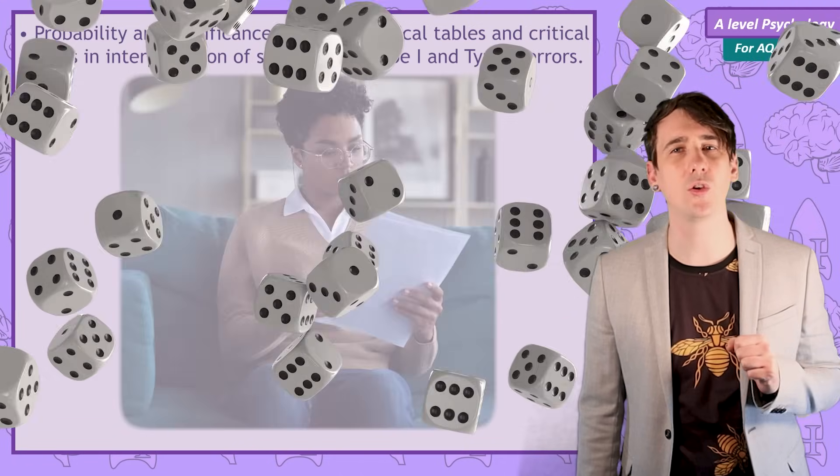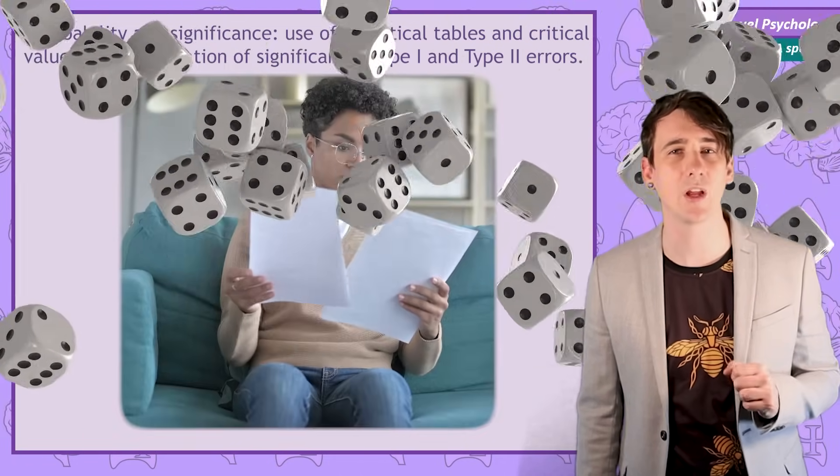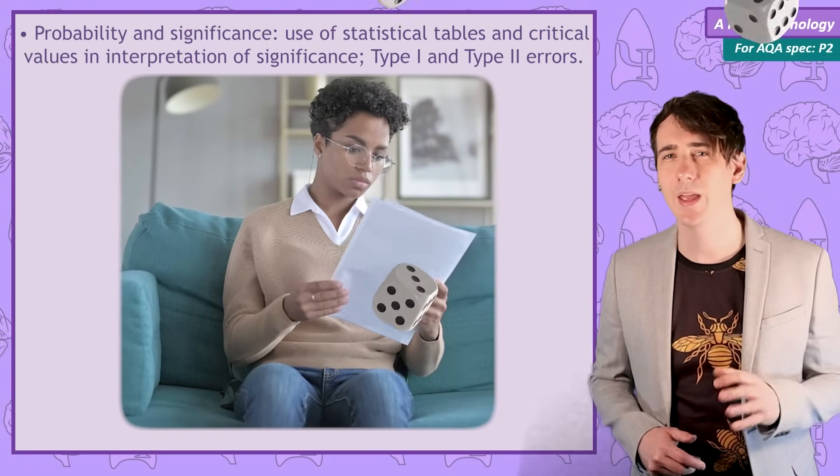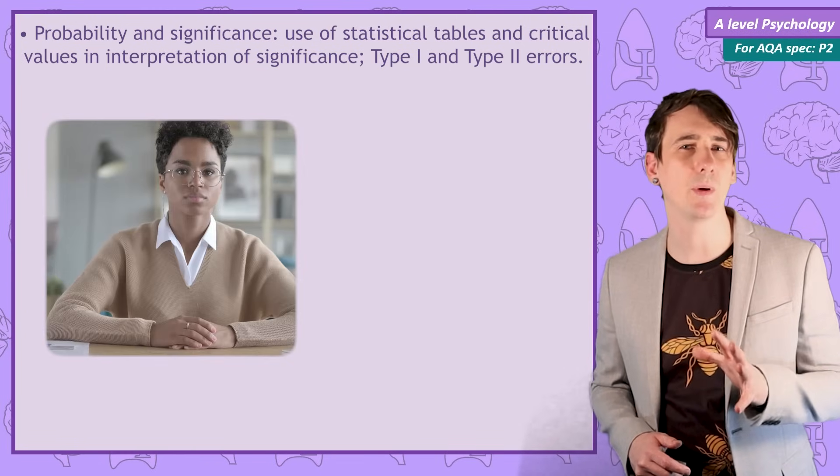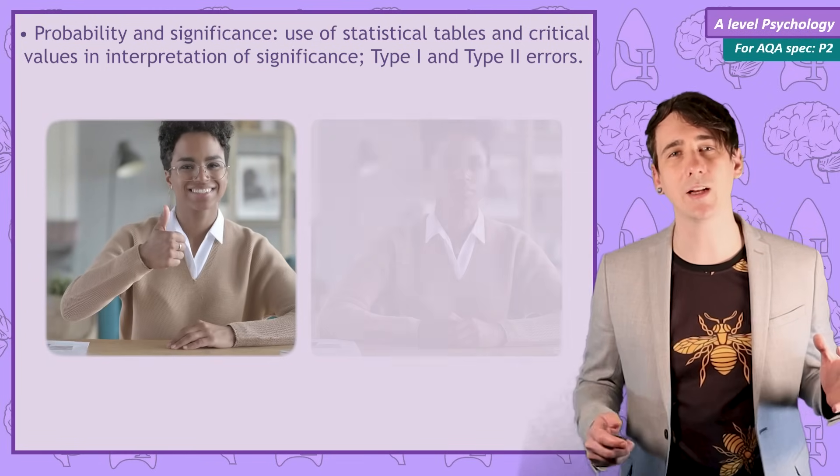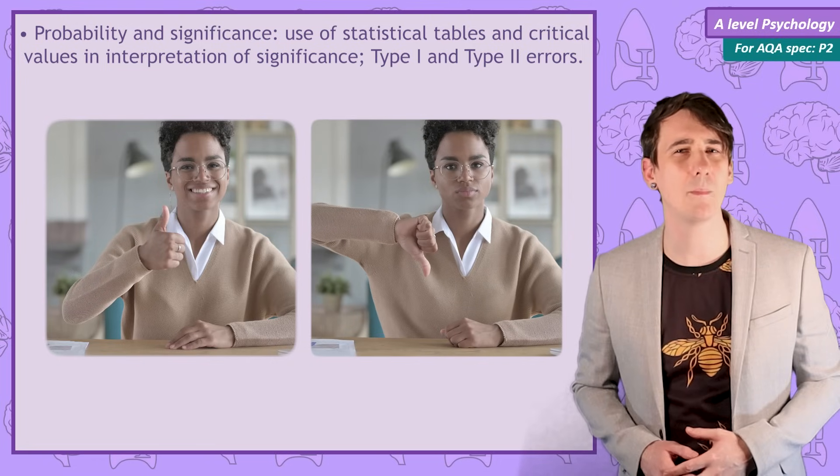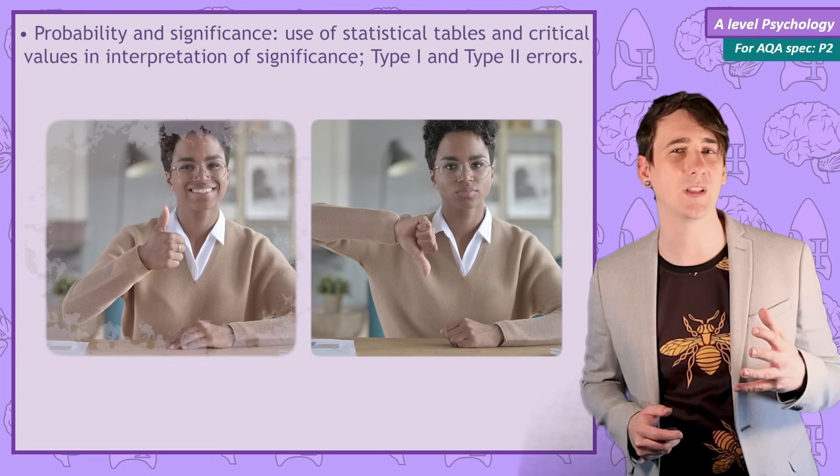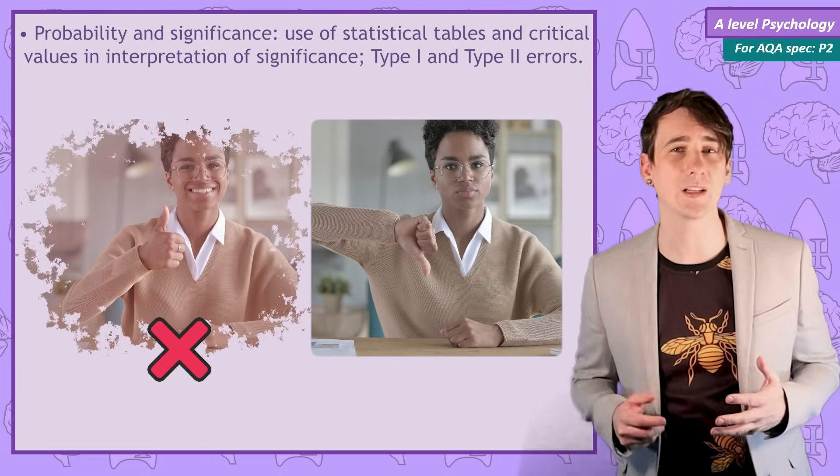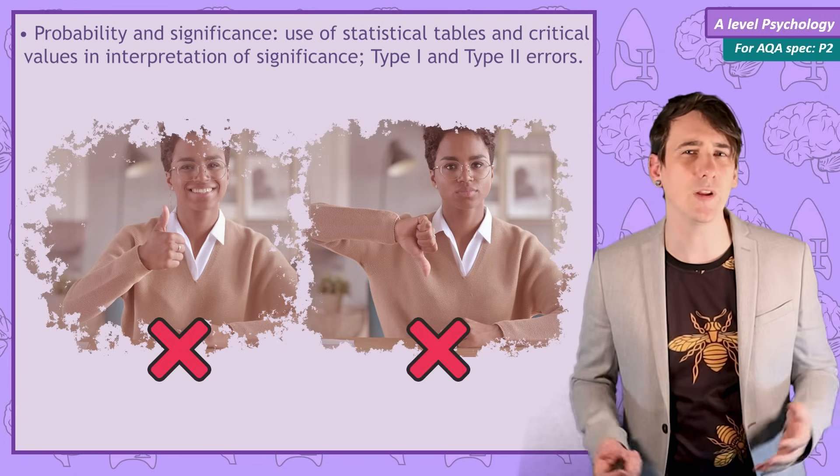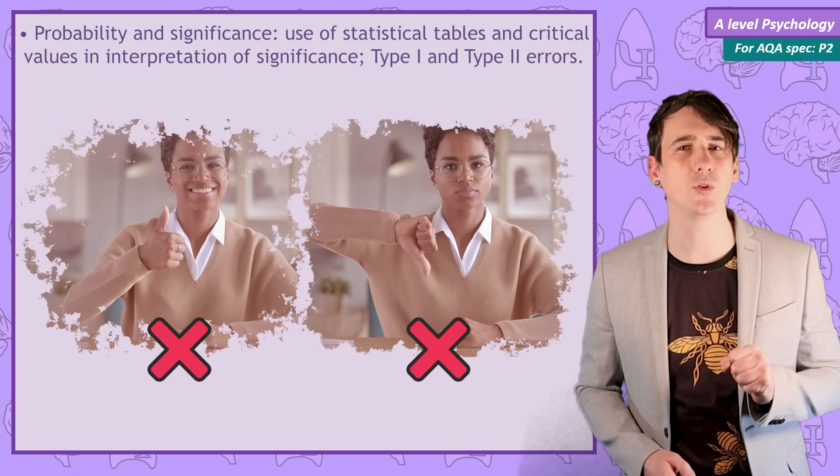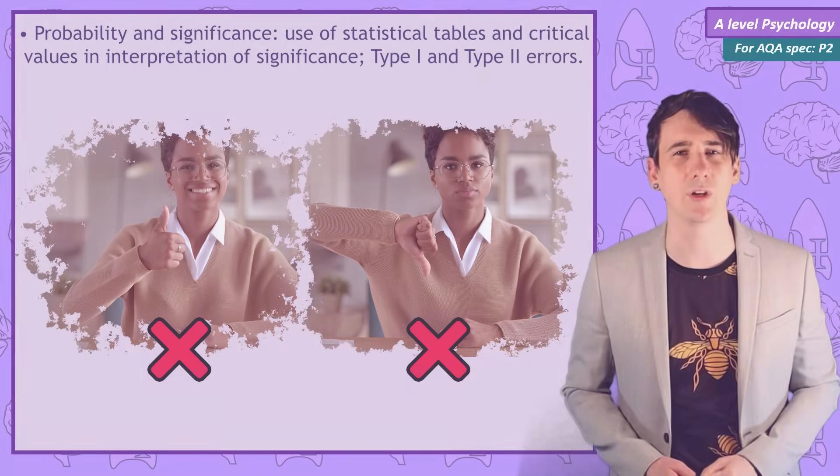Practicing psychologists look over the data they collect in their research and then they have to make a decision. Is this data strong enough to accept my alternate hypothesis? Or do I need to reject my alternate hypothesis and accept the null hypothesis? Making an error by accepting a hypothesis that isn't true, or rejecting a hypothesis that is true, is a real risk, and probability is the tool psychologists use to manage that risk.